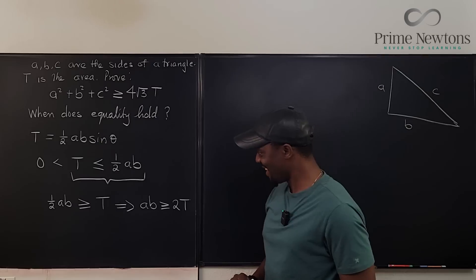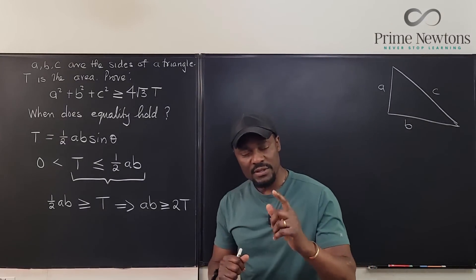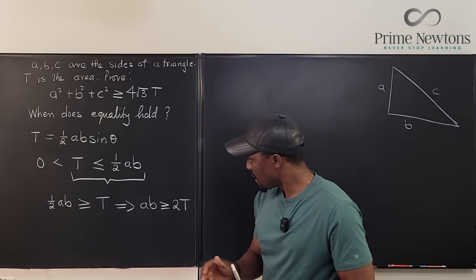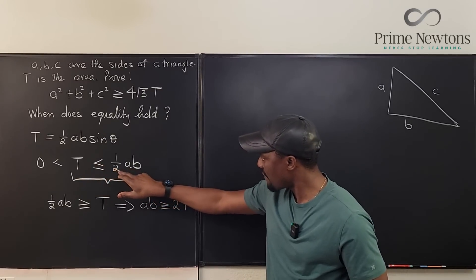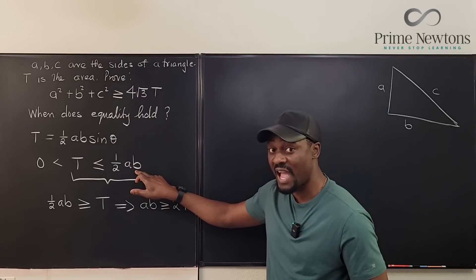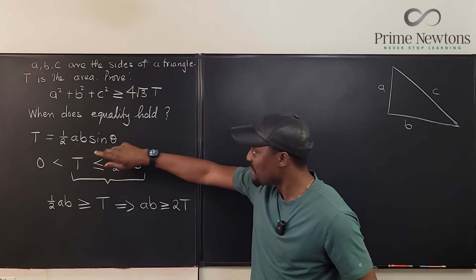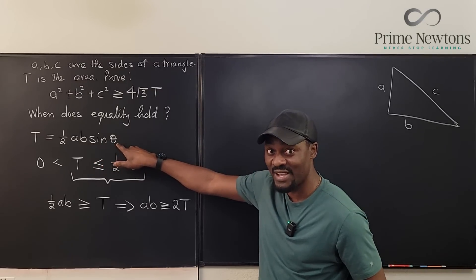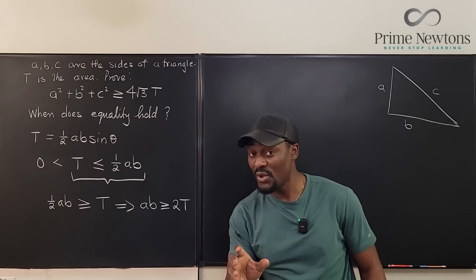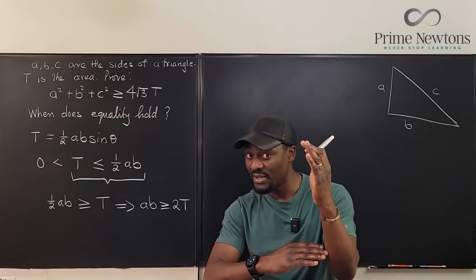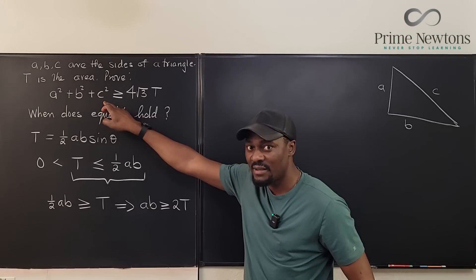It still does not look like what we need. What we have is AB, but what I'm looking for is A squared plus B squared plus C squared. The maximum value of T, which is the area, is always half AB. And you notice that this is the formula for finding the area of a triangle if it is a right triangle — the maximum you can get is when theta is 90 degrees. So we can start seeing something that looks like the Pythagorean theorem.